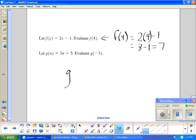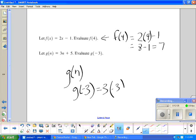G of N, we're looking at G of negative 3. Wherever I see N, I'm going to plug in negative 3, which is negative 9 plus 5.